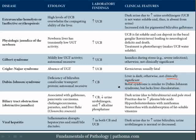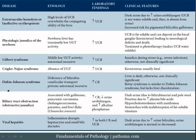Dubin-Johnson syndrome is not clinically significant. However, one very high-yield board point is that the liver will be pitch dark. For example, a surgeon operating for some other reason might notice a pitch-black liver — that would be suggestive of Dubin-Johnson syndrome. There is a related disorder called Rotor syndrome, which is essentially the same as Dubin-Johnson, except the liver lacks the dark discoloration.